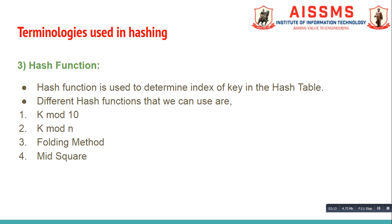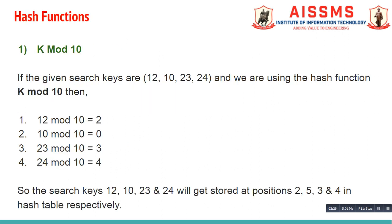Different hash functions that we can use are k mod 10, k mod n, folding method, and mid square method. Let me explain the k mod 10 function with the help of an example. If the given search keys are 12, 10, 23, and 24, and we are using hash function k mod 10, then 12 mod 10 gives 2.